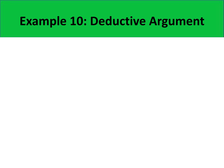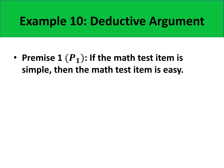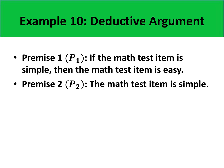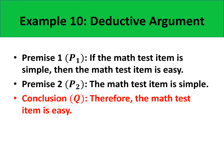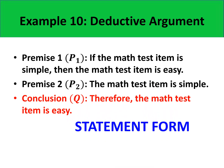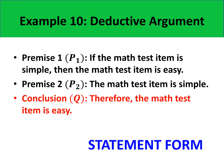For example, premise 1: if the math test item is simple, then the math test item is easy. Second premise: the math test item is simple. Conclusion: therefore, the math test item is easy. This is the statement form of the deductive argument.